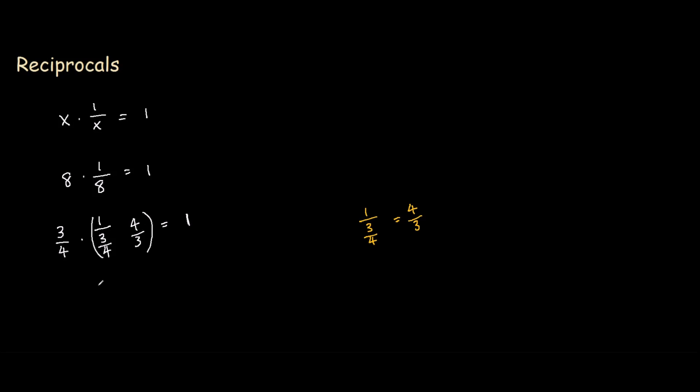Now there's only one number that does not have a reciprocal. That is 0, because if you try to multiply 0 by anything, you can never equal 1.